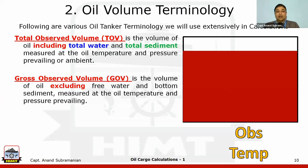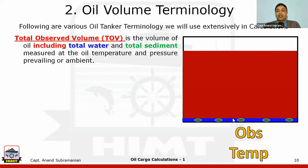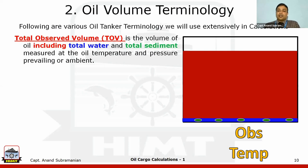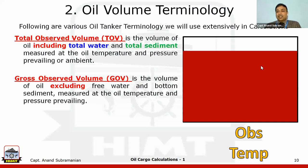When we come to gross observed volume (GOV), we exclude the water and the bottom sediments — finally, what we have is only the oil. The charterers are not going to pay freight for water, because water is freely available. The bill of lading will not include this free water at the bottom. So water and sediments are excluded in all tanker calculations for freight calculations. That is the reason for changing from total observed volume (TOV) to gross observed volume (GOV) — only the oil in the tank.